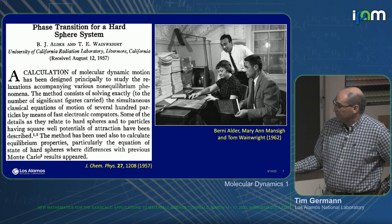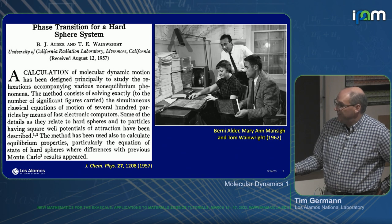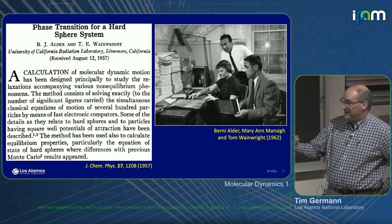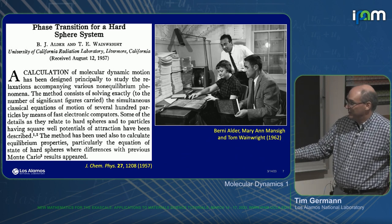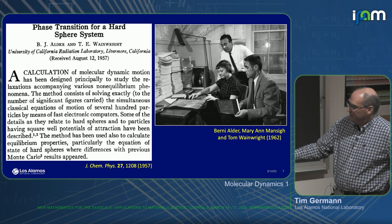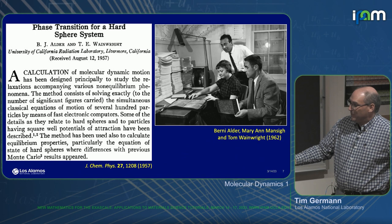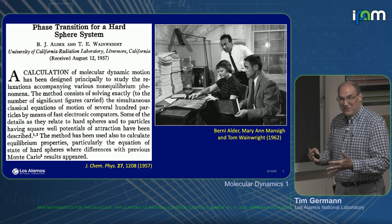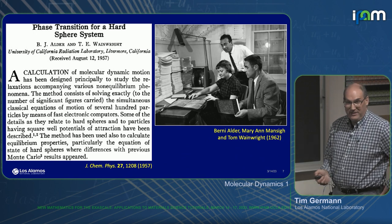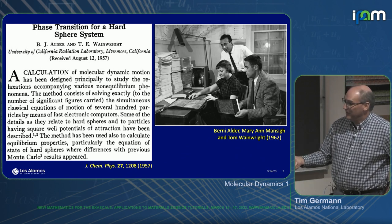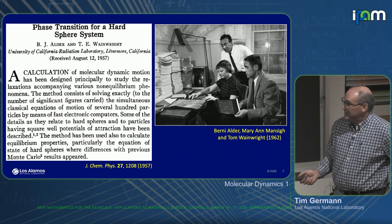This came out in 1957, Alder and Wainwright. Marianne Mansing actually wrote most of the programs and did most of the calculations and analysis. Here it's showing some images of 2D hard disks melting. She did a lot of work, but at that time it's kind of like lab technicians or people in the machine shop who really make the experiments work but weren't credited on the paper — she was a key part of the team.